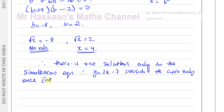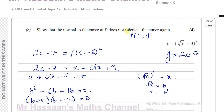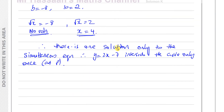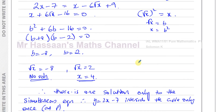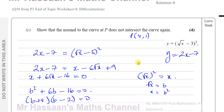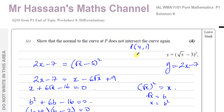So the normal to the curve at P does not intersect the curve again — that's the answer to part C, completing question 10 from the end of topic worksheet and question 9 from the Solomon K paper. Thank you for watching and see you soon.